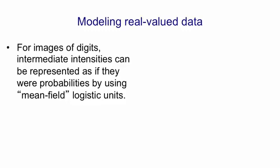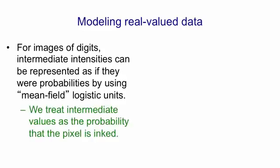That is, numbers between 1 and 0 that are actually the probability of a logistic unit being on. So we treat partially inked pixels as having a probability of being inked. This is incorrect, but it works quite well.